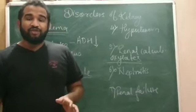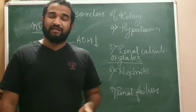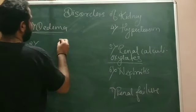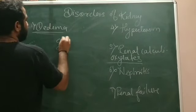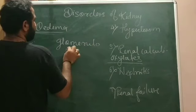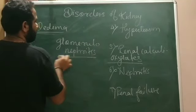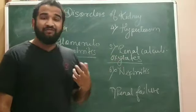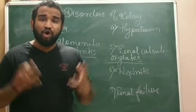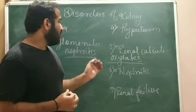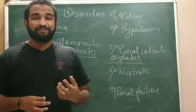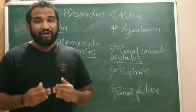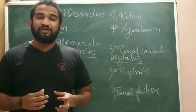The next condition is nephritis — inflammation of any part of the nephron is called nephritis. There are two conditions: the first is glomerulonephritis, where the glomerulus gets inflamed and is engorged with blood. The second is pyelonephritis, where the renal pelvis and the medullary region get inflamed or swollen.